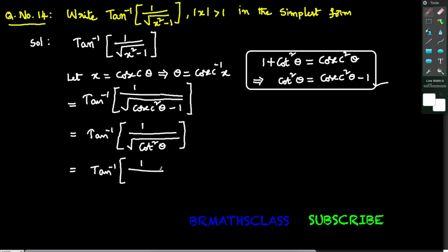Observe that square root of cot squared theta — since cot squared theta is cot theta whole square, the square root and the power of two cancel, giving cot theta in the denominator. From trigonometry reciprocal formulas, tan theta equals 1 divided by cot theta.